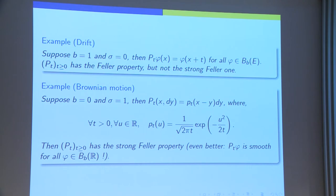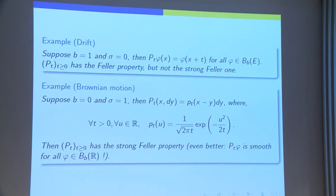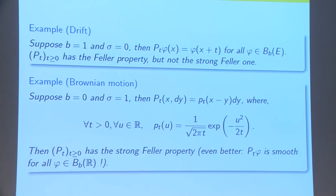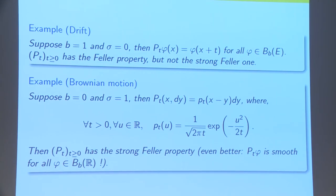Here are two examples. First, consider the case where σ is 0 and B is equal to 1. Then, we're just in the case of an ODE. In that case, clearly, the semi-group is just given by translation of the initial condition by T.